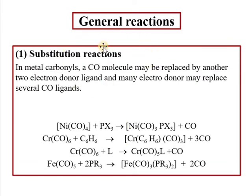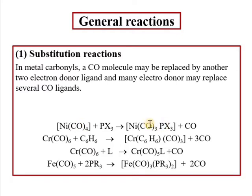Now if you see the chemical reactions, there are certain chemical reactions which metal carbonyls show. Number one is the substitution reaction. Substitution reaction involves different ligands, and the extent of exchange depends on how much electron donor the ligand is. If the ligand is a two-electron donor, then one carbonyl can be replaced, because carbonyls are also two-electron donor species. If we consider C6H6, it has three pairs of electrons to donate, so three carbonyls can be replaced.